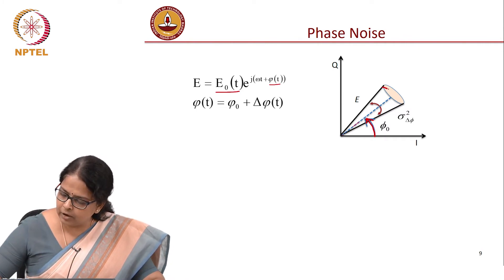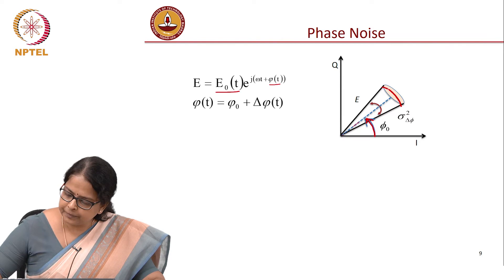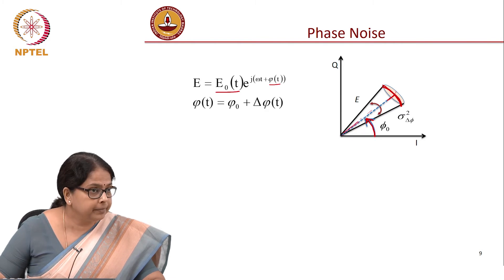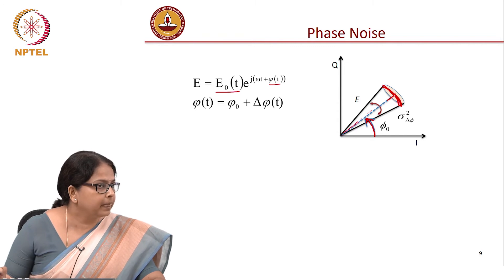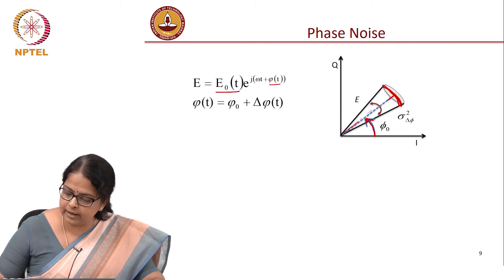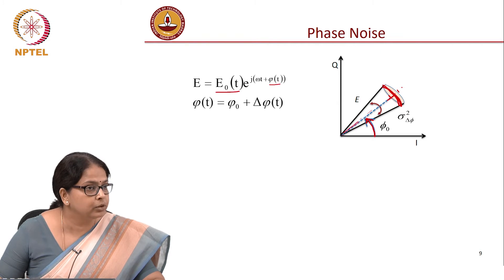If there is no intensity noise, it is just the arc of the circle, the length of this line is the same if there is no intensity noise. Intensity noise would mean that the amplitude has changed. The phase noise will result only in the angle. So this patch that I have drawn here actually shows some intensity noise also.